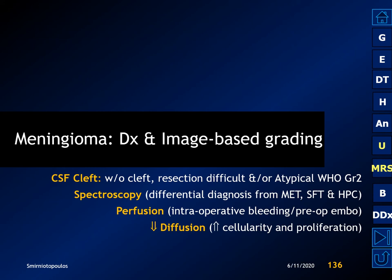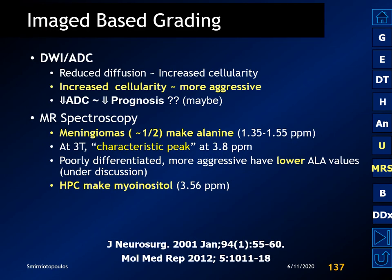Let's talk briefly about image-based grading of meningiomas. It's important to assess the tumor for the presence of the CSF cleft, which has important implications for the neurosurgeon. The absence of the cleft may be a sign of an atypical WHO grade 2 tumor. MR spectroscopy can be useful in the differential diagnosis for metastatic disease, solitary fibrous tumor, and hemangiopericytoma. Decreased diffusion within the tumor has been associated with increased cellularity and proliferation, which may predict a worse prognosis.